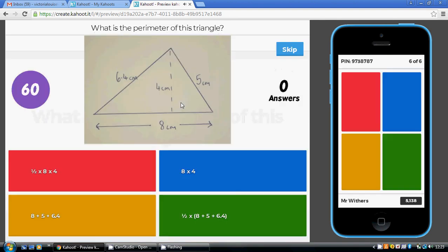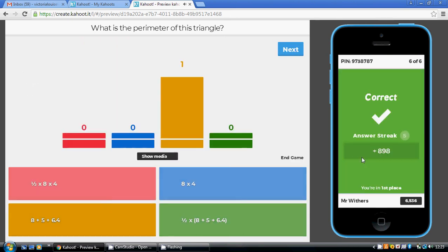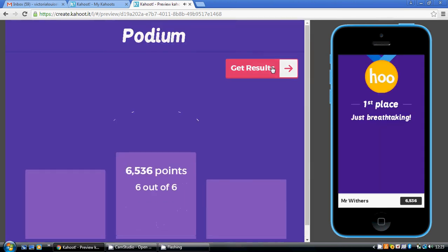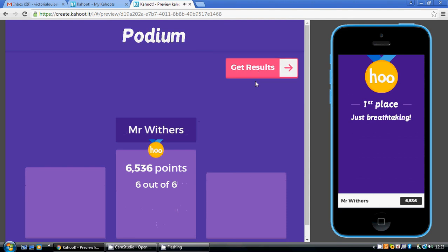Question six to finish: the perimeter of this triangle. Perimeter is the length all the way around the outside. So if we start bottom left, it would be the eight plus the five plus the six point four. So that's the gold answer. And there we are, so hopefully you got all of those right.